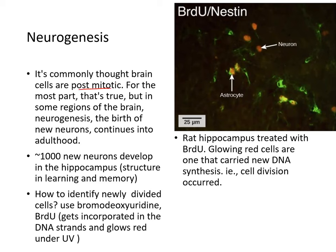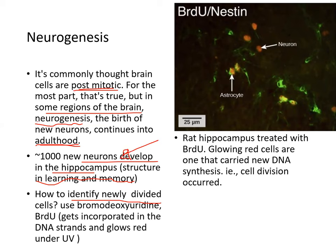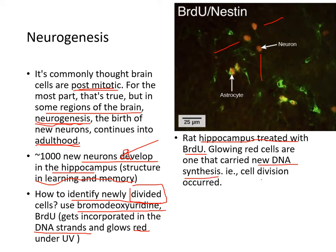It's commonly thought that brain cells are post-mitotic, and for the most part that's true, but in some regions of the brain you can actually have neurogenesis, or birth of new neurons, which continues into adulthood. About 1,000 new neurons develop in the hippocampus, the structure responsible for learning and memory. Scientists use bromodeoxyuridine, which gets incorporated into the DNA strand and glows red under UV, to identify newly divided cells. In rat hippocampus treated with BrdU, glowing red cells show that they have nascent or new DNA synthesis.